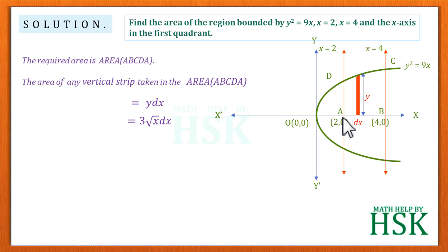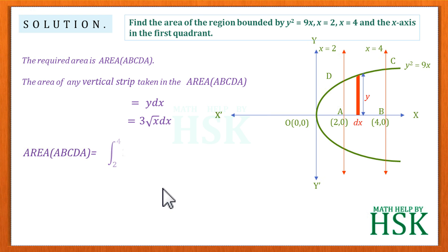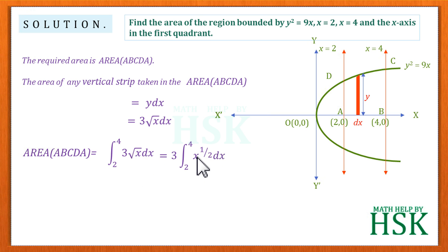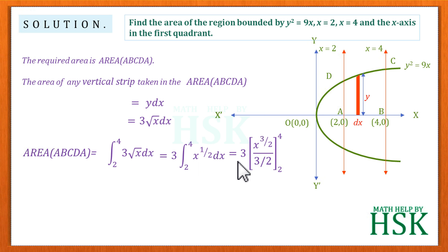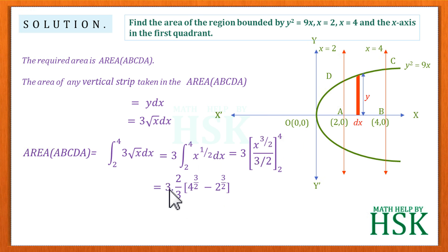Since we require all strips from point A to B, we integrate from x = 2 to x = 4. The required area equals the integral of 3√x·dx from 2 to 4. Writing √x as x^(1/2), on integrating we get x^(3/2) divided by (3/2), multiplied by 3, with limits 2 to 4. The (3/2) in the denominator is written as (2/3), keeping the 3 as it is.